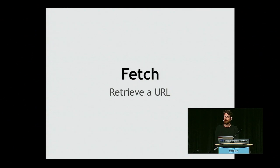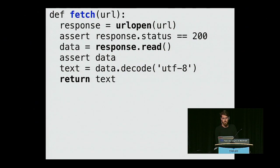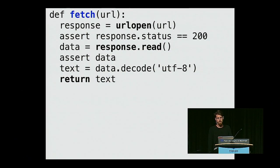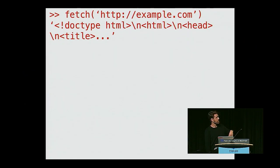The first thing you need is to fetch a URL. Here's a simple fetch function. We URL-open the URL, make sure we got an HTTP 200 OK, which means everything's good, read the data, assert that we actually got something, convert the bytes to text, and return the text. If you run this in your interpreter and fetch example.com, you're going to get a nice HTML document back.